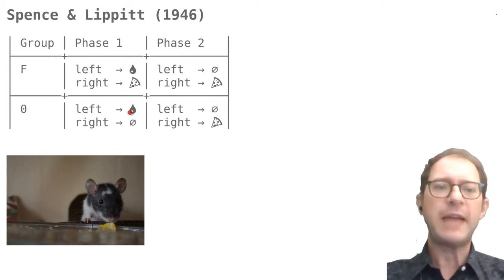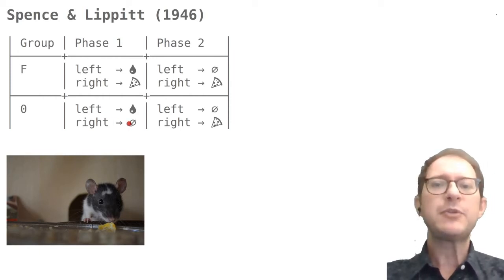Rats in group F, which stands for food, could also find food if they went right, so right to food for these rats and right to nothing for the other rats. But rats in group F had been pre-fed before the experiment, so they were not at all hungry, and in fact they didn't even try to eat the food.